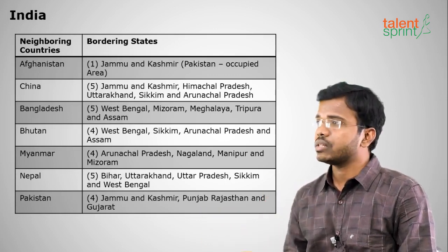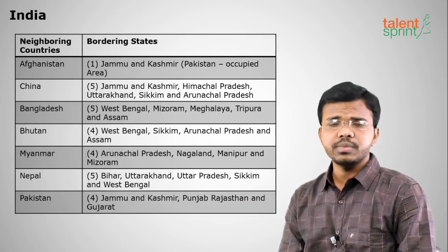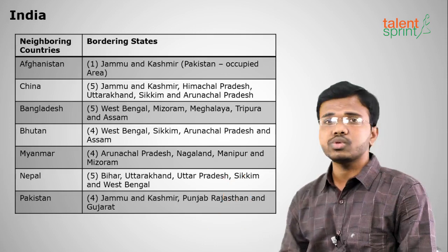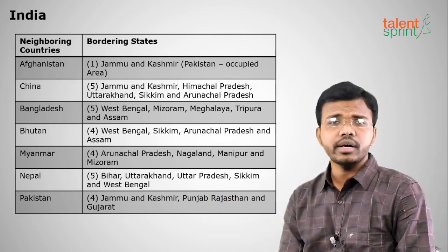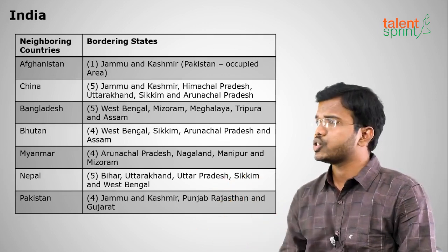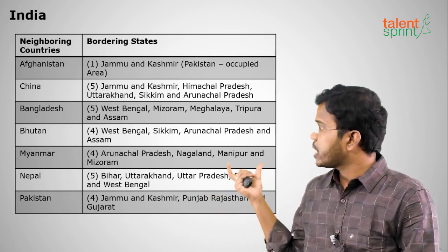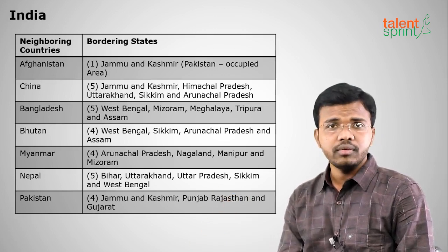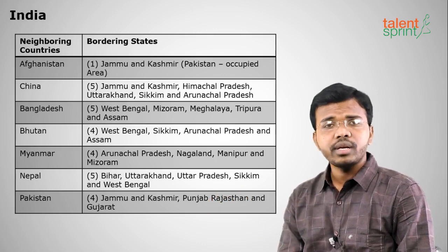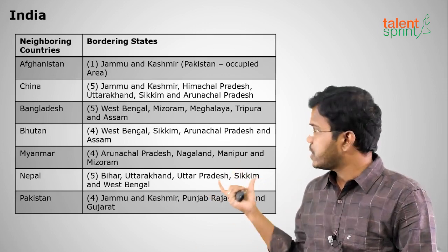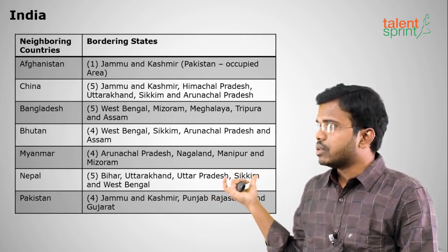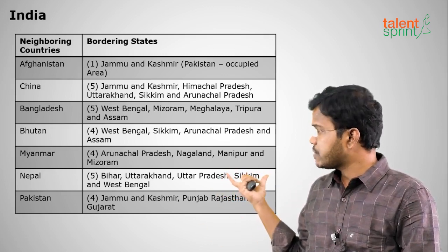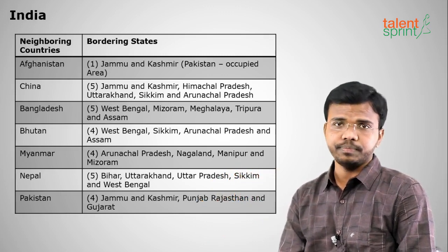Regarding which Indian states share borders with each country: Afghanistan shares boundary only with Jammu & Kashmir (Pakistan-occupied). China shares boundary with five states: Jammu & Kashmir, Himachal Pradesh, Uttarakhand, Sikkim, and Arunachal Pradesh. Bangladesh shares boundary with five states: West Bengal, Assam, Meghalaya, Tripura, and Mizoram.